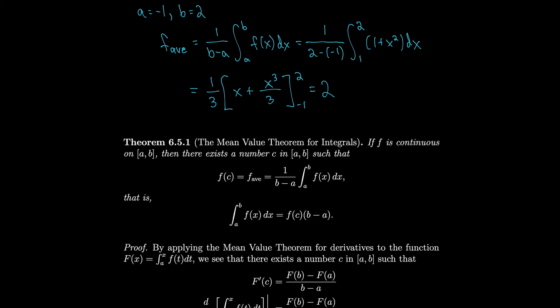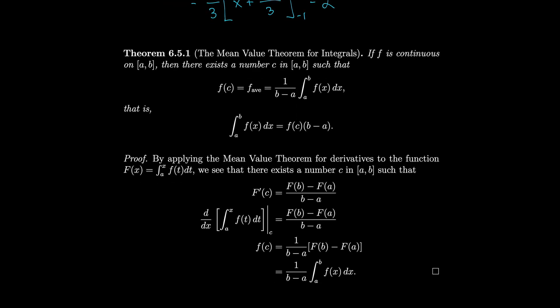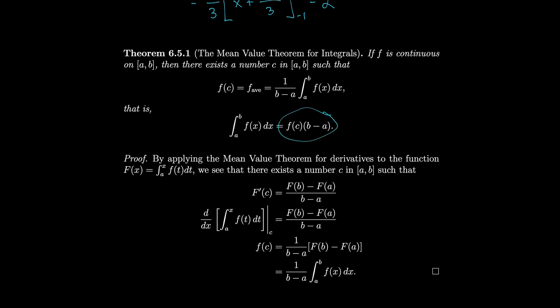This leads us to the Mean Value Theorem for Integrals. If f is continuous on the closed interval [a, b], then there exists a number c in [a, b] such that f(c) is equal to the average value of the function. In other words, if we multiply both sides by b minus a, we end up with the integral equaling f(c) times b minus a. Let's prove this.